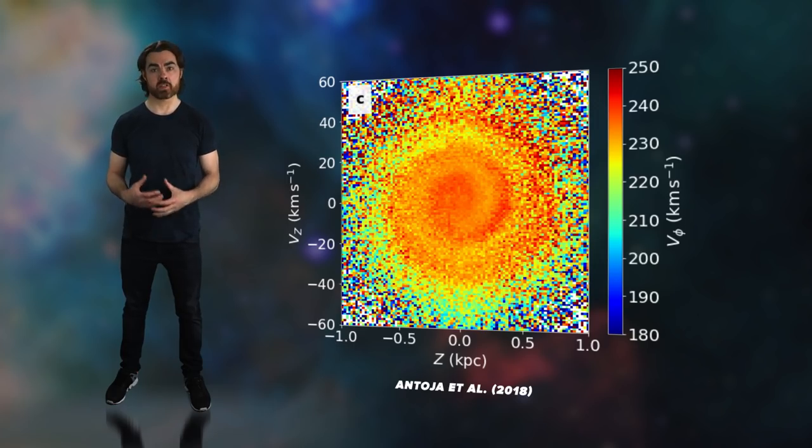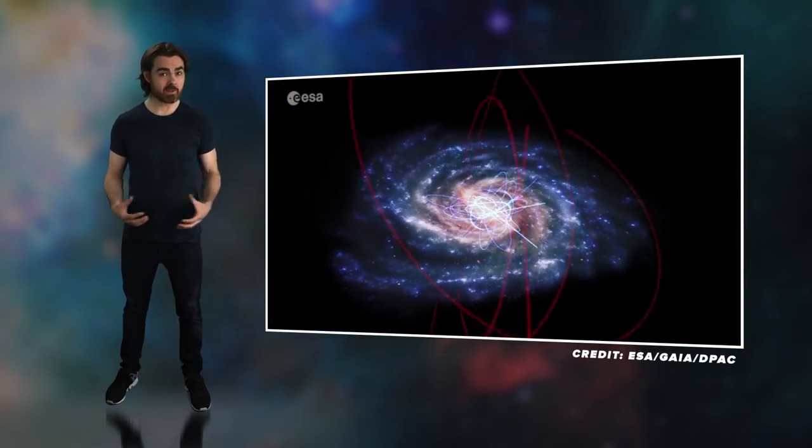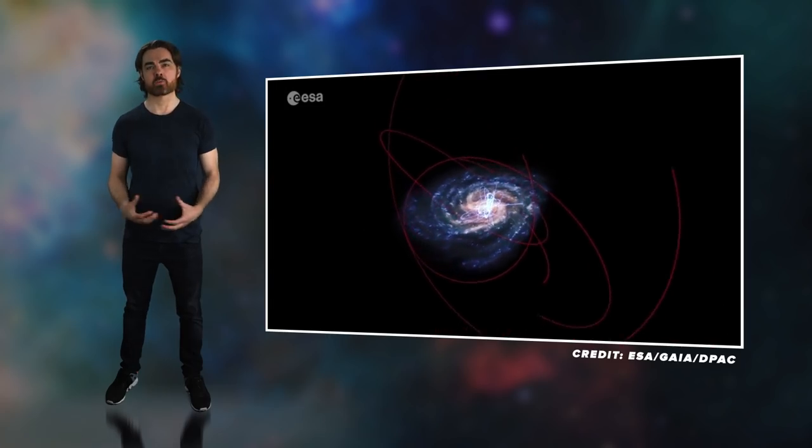Astronomers have already found evidence in the Gaia data that our galaxy was disturbed hundreds of millions of years ago, probably by an encounter with the Sagittarius dwarf spheroidal galaxy. And mapping globular clusters and dwarf galaxy orbits also tells us about future interactions with the Milky Way.